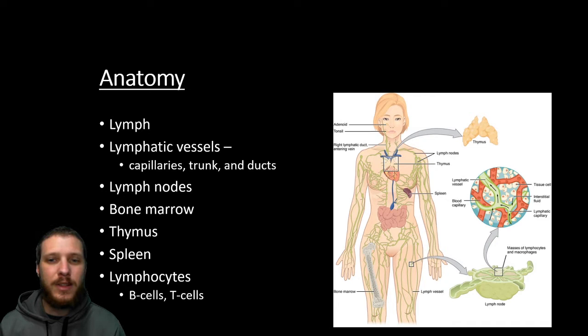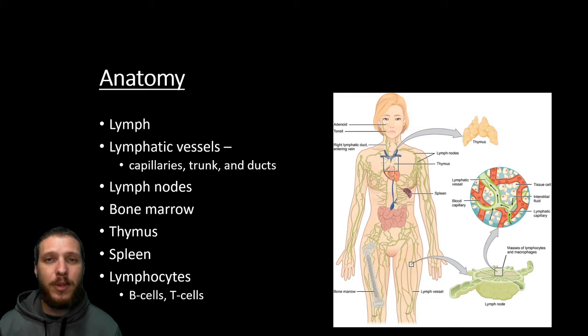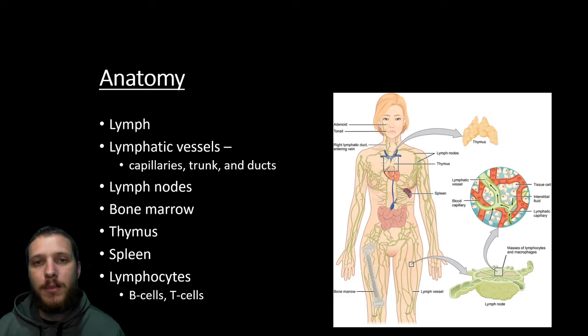We're going to need vessels to transport this fluid — that's the job of the lymphatic vessels, which are very similar to the capillaries in the cardiovascular system. Along the lymphatic tract, we have special structures known as lymph nodes, whose job is to filter out lymph and look for any pathogens, generating an immune response if anything is detected. We also have primary and secondary lymphatic organs that either generate or store immune cells, including bone marrow, the thymus, spleen, and lymphocytes.